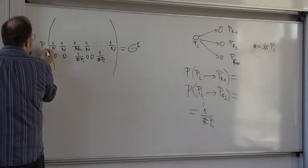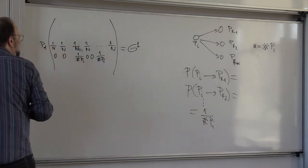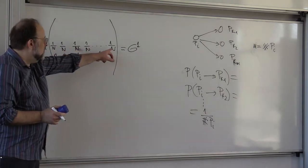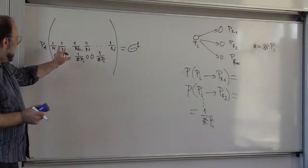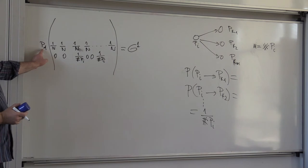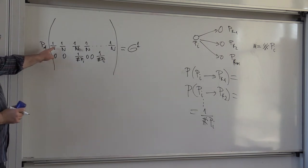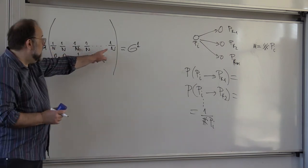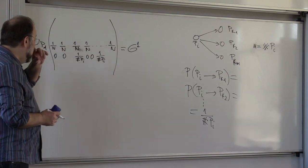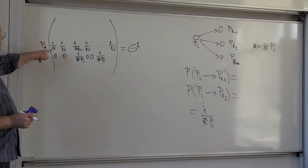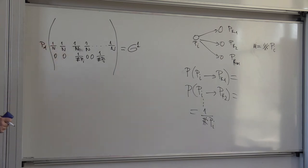If this is a dangling webpage, what is the explanation of this 1 over N? It simply says: if you are at a dangling webpage, there is equal probability to go to any other webpage on the web whatsoever. And this probability is, of course, 1 over the number of webpages.